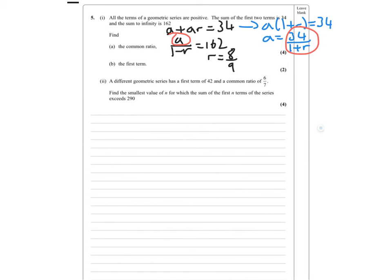That was part A. For part B, find the first term: A times (1 + 8/9) equals 34. Solving that, you should get A equals 18. Pretty straightforward.